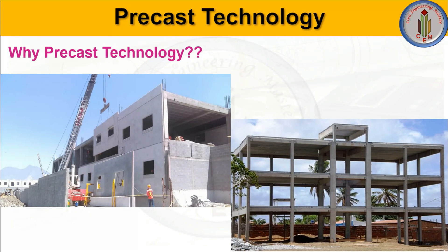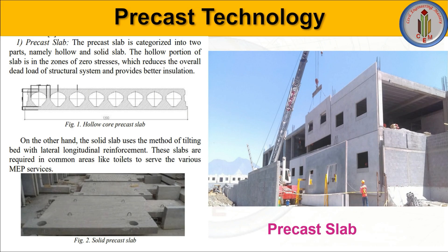This technology helps in saving up to 60 percent of the time compared to the conventional method of construction. For example, if we construct using the conventional brick-mortar method, it takes one year to complete a G+1 project, whereas the precast method takes only four months to complete the same project.